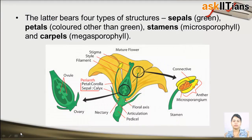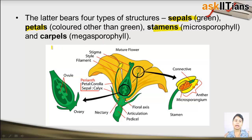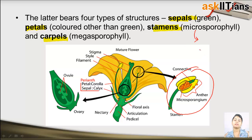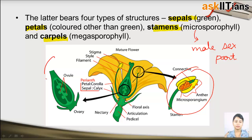There are some more structures of the flower shown in a diagram: sepals, petals, stamens, and the carpel. The microsporophyll — that is the stamen — is the male sex part of the flower. The carpel is the part which contains the ovary and is the female part of the plant.